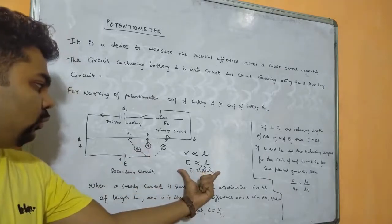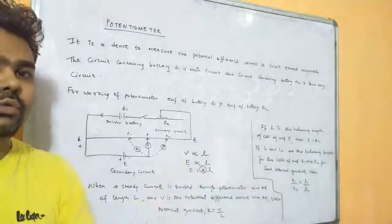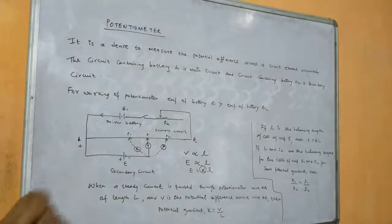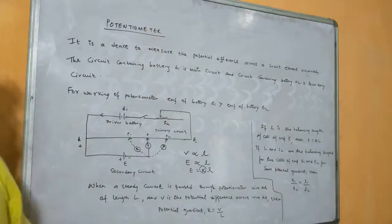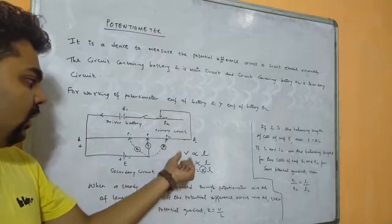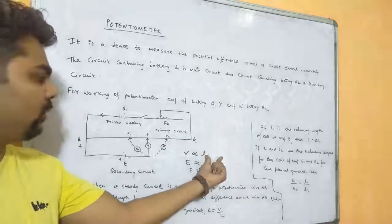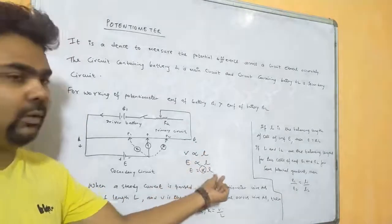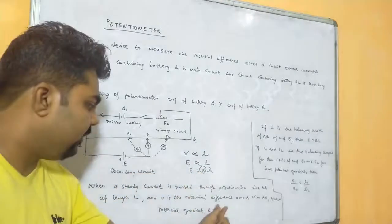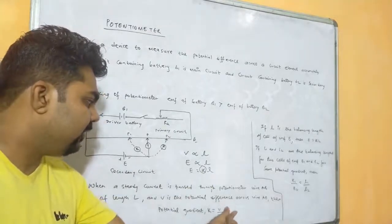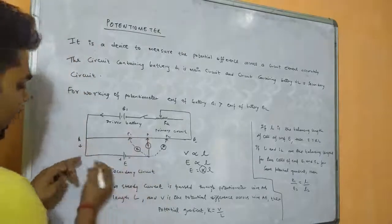The principle of the potentiometer: E = kl, where k is the potential gradient and l is the balancing length. The potentiometer measures potential difference accurately and is more sensitive than a voltmeter. The potential difference is directly proportional to length: E = kl, where k = V/l, and l is the balancing length.